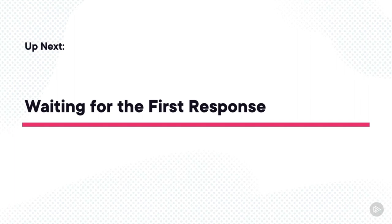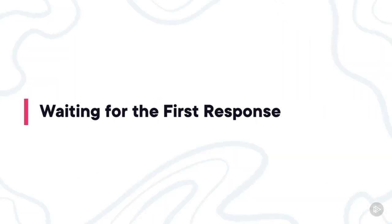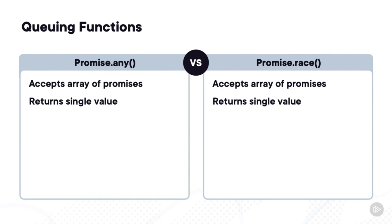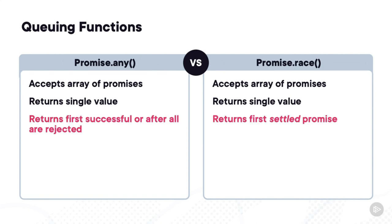As I mentioned, any waits until all promises reject before it fails. What if you didn't want that and instead wanted the first response to come back whatever it was? The Promise.race function is similar to Promise.any in that it takes an array of promises and passes a single value to its then function. The difference between any and race is when it returns. Any returns the first successful promise, otherwise waiting until all promises are rejected. But race doesn't care about the result — whenever the first promise settles, race settles. It's a race between the promises regardless of the results.